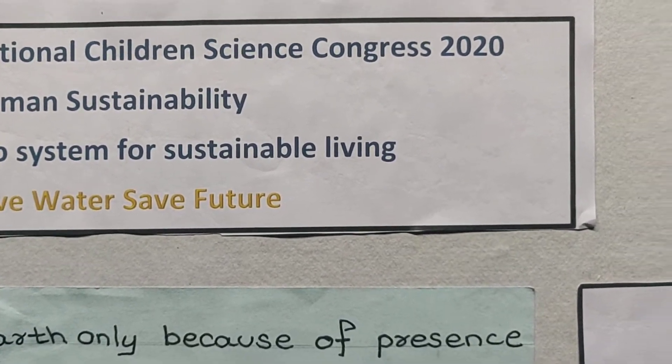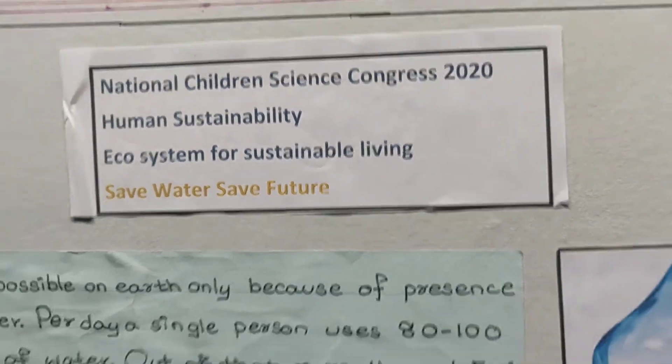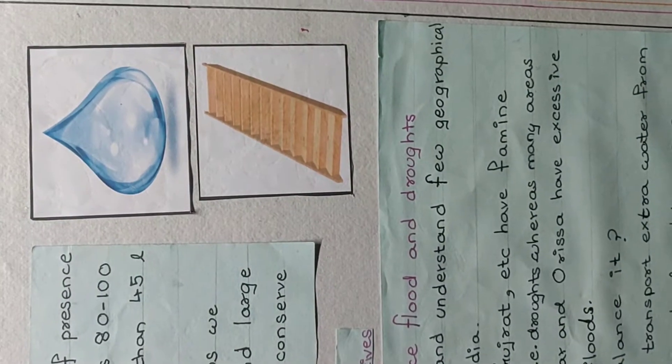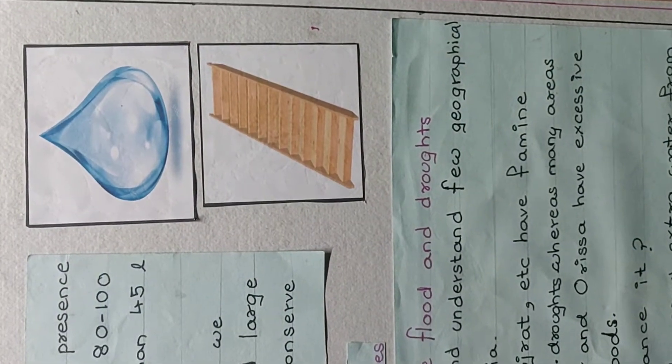Hello everyone, my name is Arya Umrikar from Universal High School, 7th Standard. Life is possible on earth only because of the presence of water. Still, we use more than 80 to 100 gallons of water per day, out of which more than 45 litres is wasted.